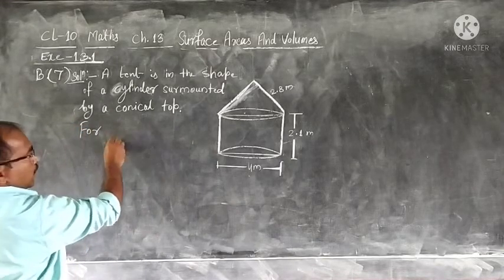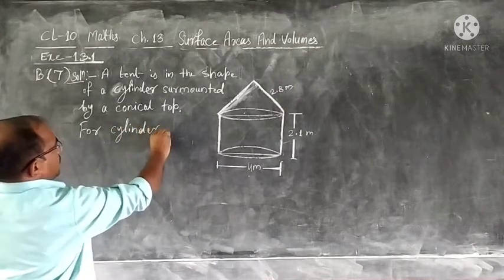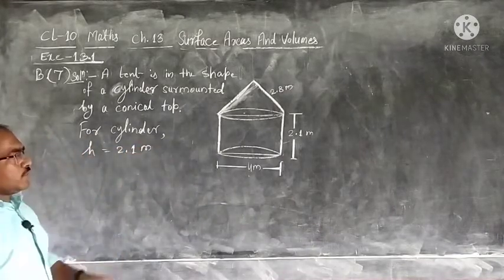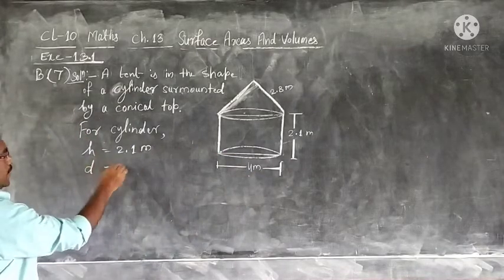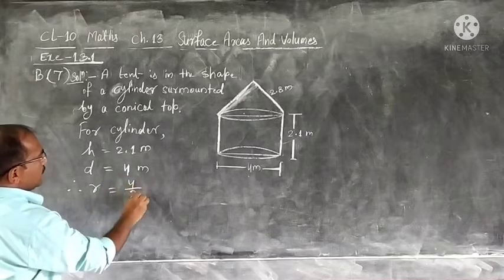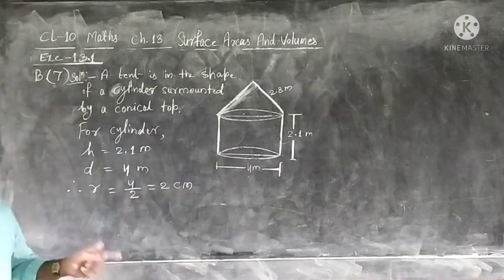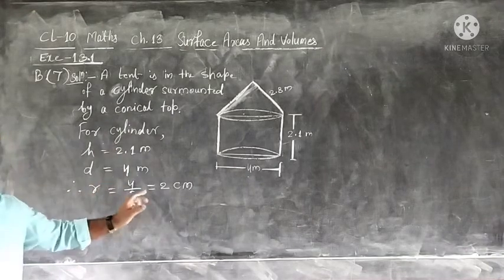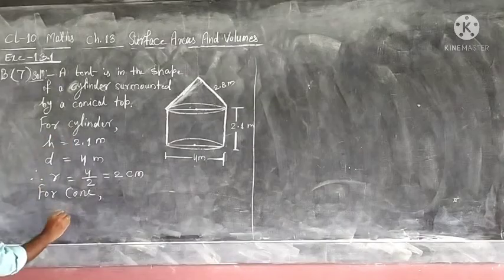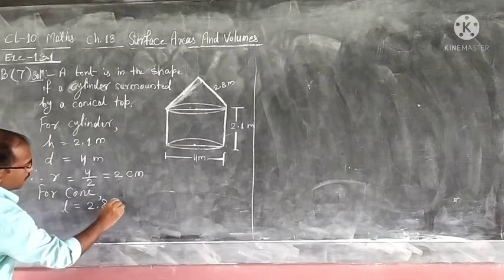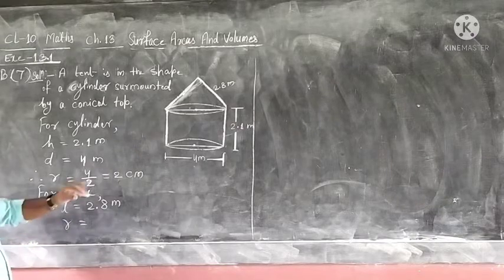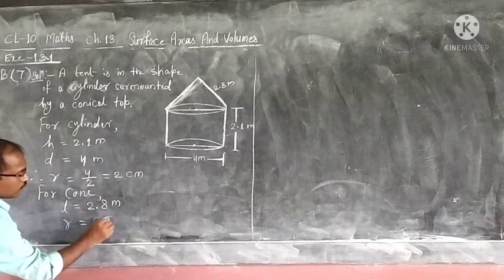The tent has two portions. For the cylindrical part, height is 2.1 meters and diameter is 4 meters. When we see the diameter, immediately we make it half because we will use radius, not diameter. So radius is 2 meters. For the conical portion, the height is 2.8 meters.